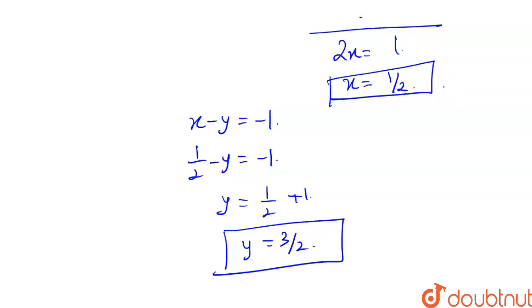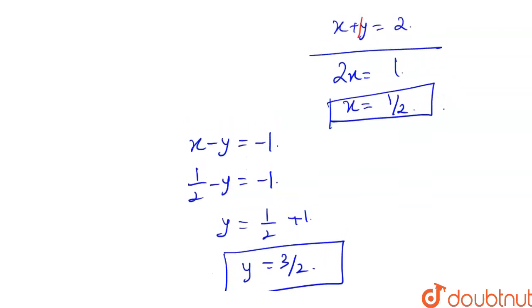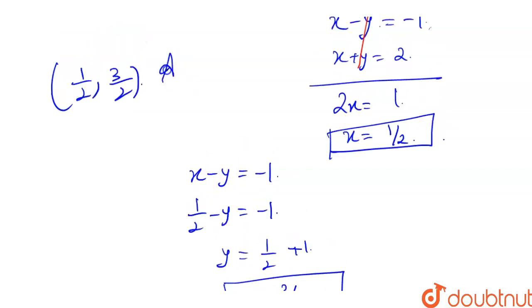x value is 1 by 2. So the intersection point is (1 by 2, 3 by 2). So 1 by 2, 3 by 2 is my answer.